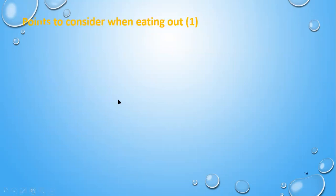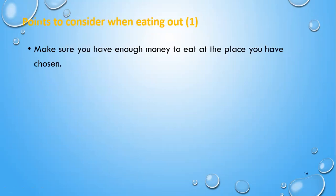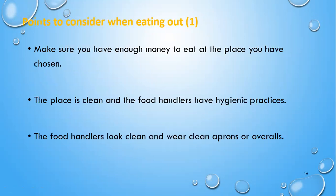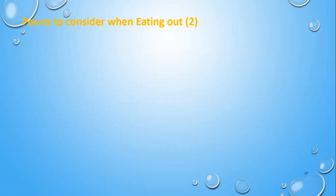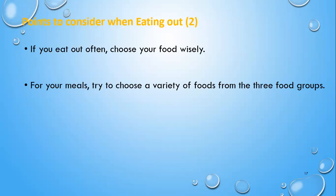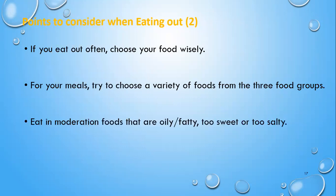Points to consider when eating out: make sure you have enough money to eat at the place you have chosen. The place should be clean and the food handlers should have hygienic practices. The food handlers must look clean and wear aprons or overalls. If you eat out often, choose your food wisely. For your meals, try to choose a variety of foods from the three food groups. Eat in moderation foods that are oily, fatty, too sweet, or too salty.